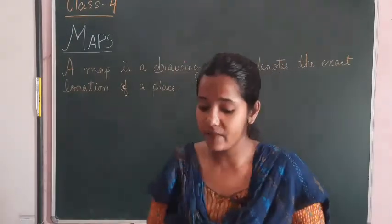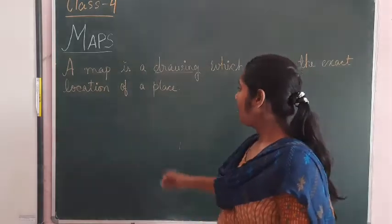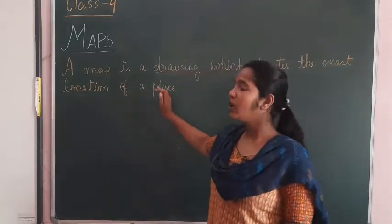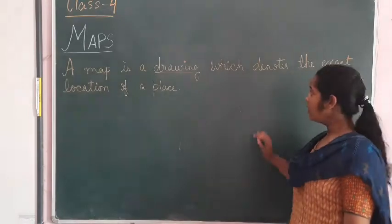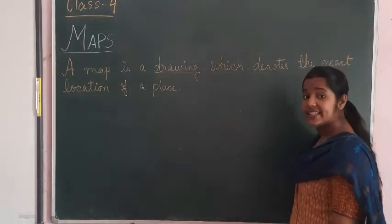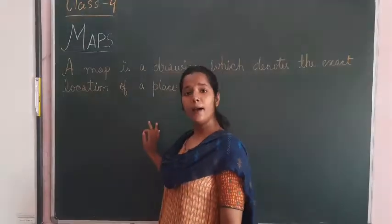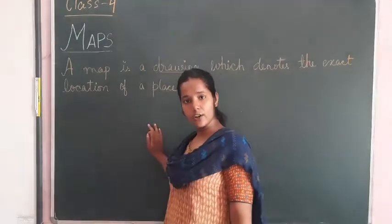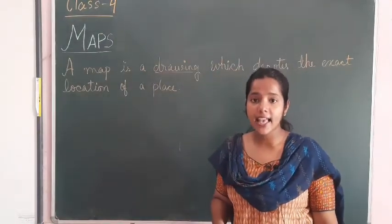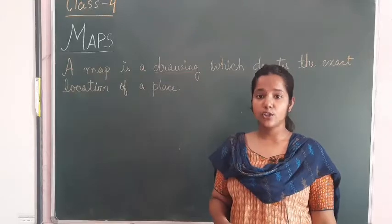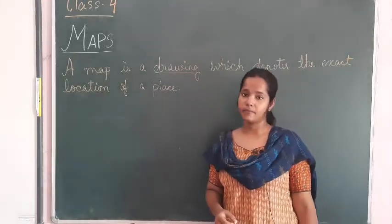At every point I am giving examples to help you understand. So a map is a drawing which denotes the exact, appropriate location of a place. It tells you the exact and appropriate location - that is what a map is.